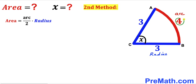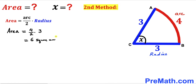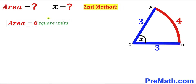Filling in the formula: Area = 4/2 × 3 = 6 square units. The sector area turns out to be 6 square units using this second method as well. That's our final answer. Thanks for watching, and please don't forget to subscribe to my channel for more exciting videos.